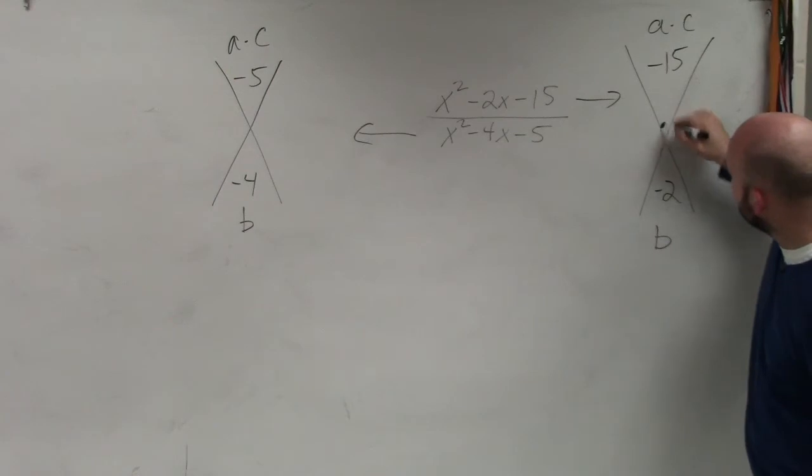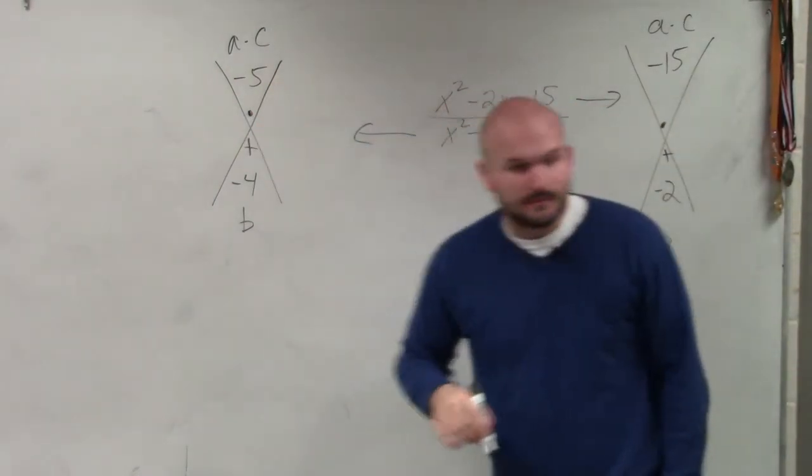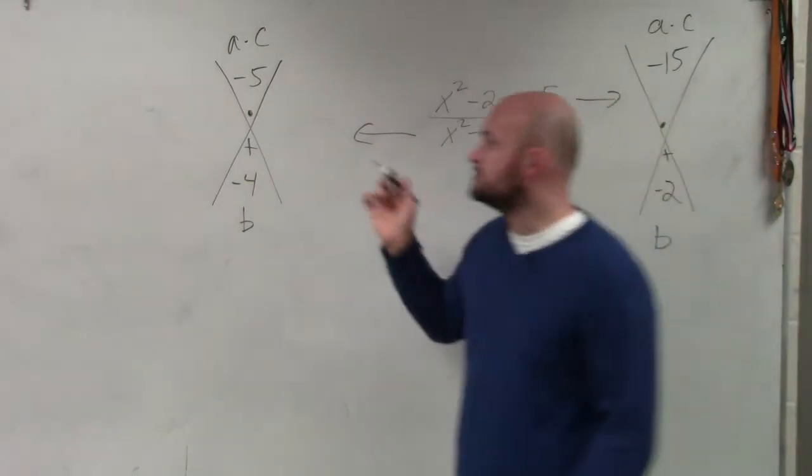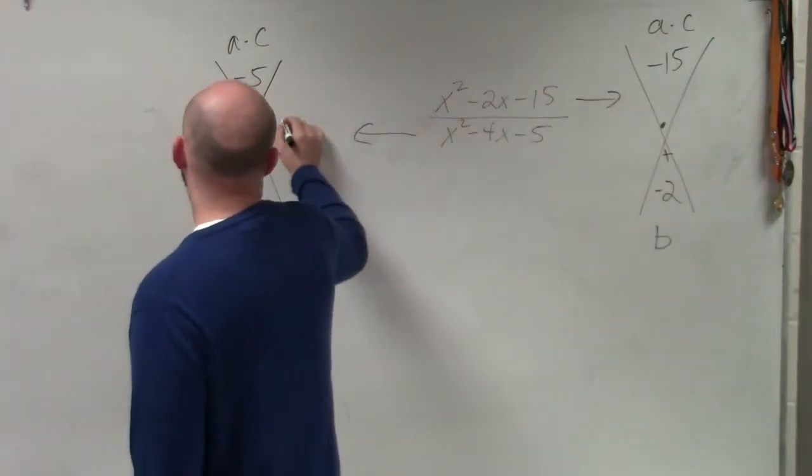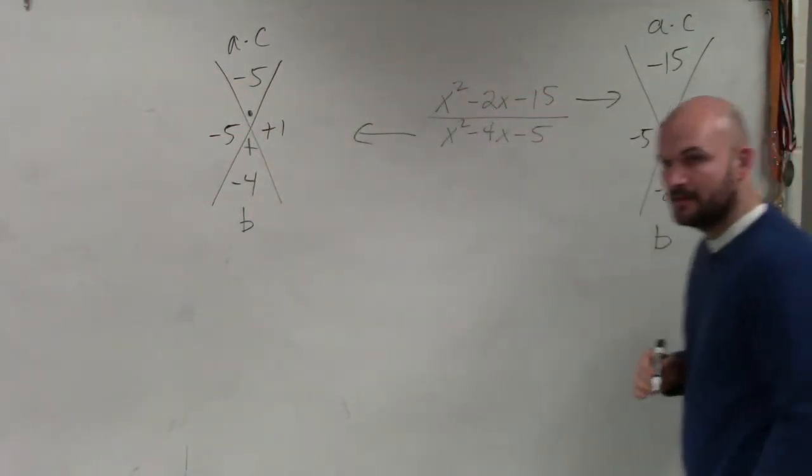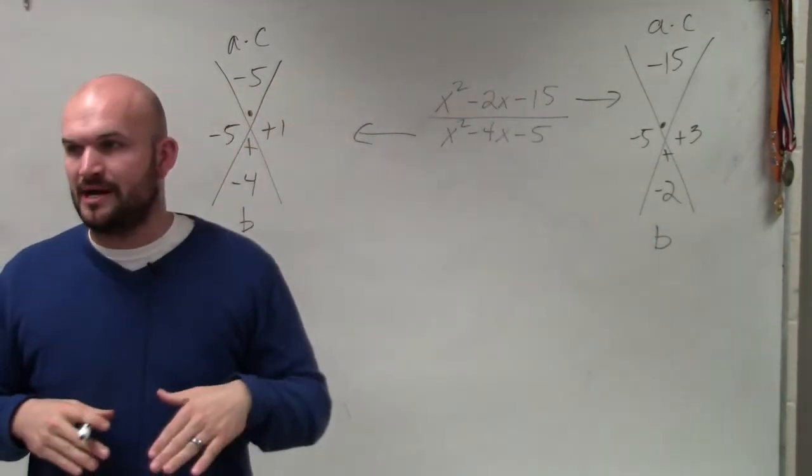Multiply, add. Multiply, add. So I'll help you guys out because I want to kind of go through these quicker. So this one is going to be a negative 5, positive 1. Over here will be a negative 5 and positive 3. Does everybody agree that those multiply to give you the top number and then add to give you the bottom number?